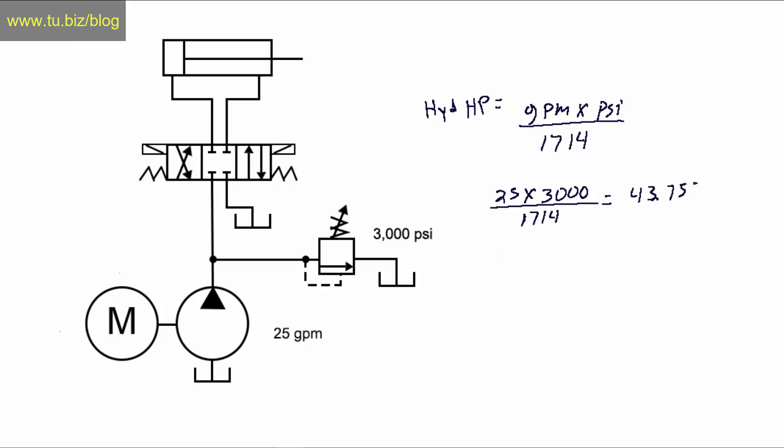And the answer of that is going to be 43.7572. So that is the horsepower that you're going to need for this system. Now this is 100% efficient. There's no inefficiencies in the system and everything is working beautiful.